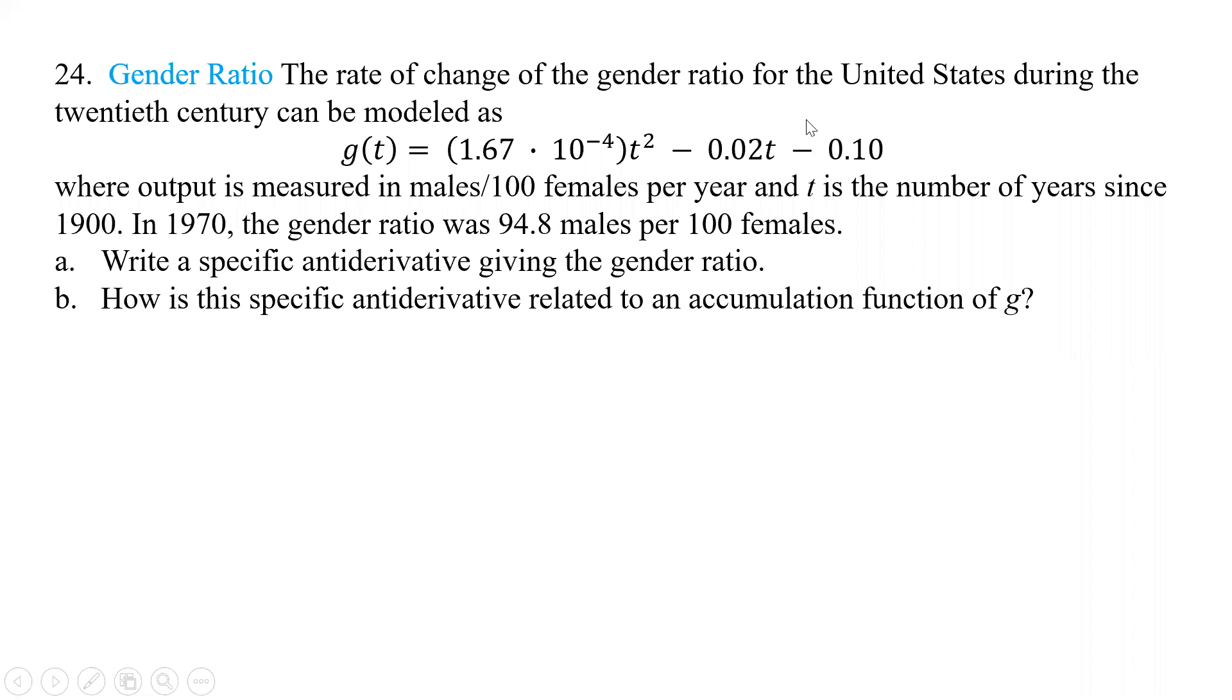All right, so here we have the gender ratio. So the ratio of change of the gender ratio for the U.S. during the 20th century can be modeled as, and notice we have 1.6 times 10 to the negative 4, so it's a really small number, t squared minus 0.02t minus 0.10.